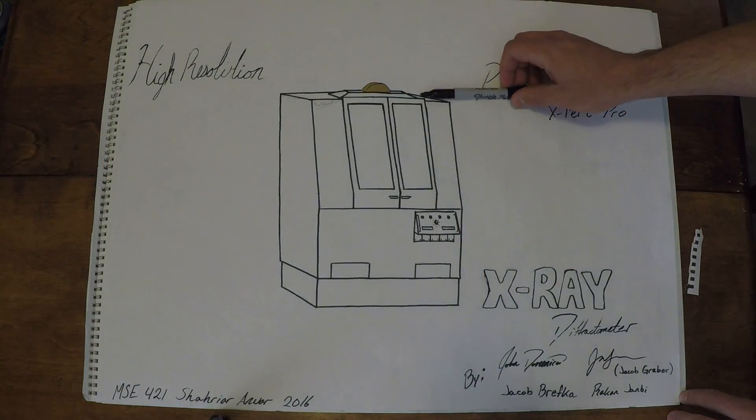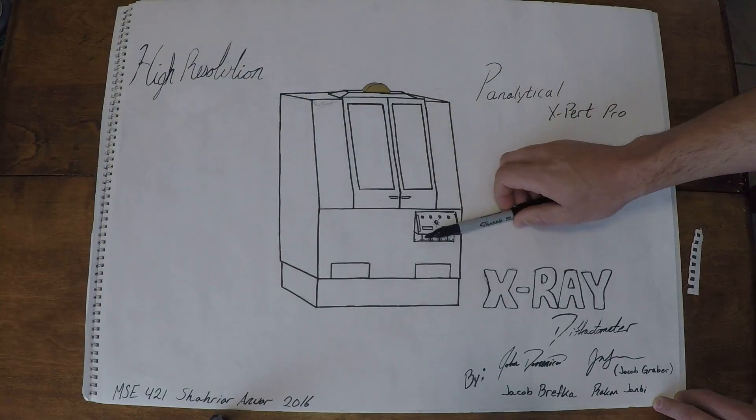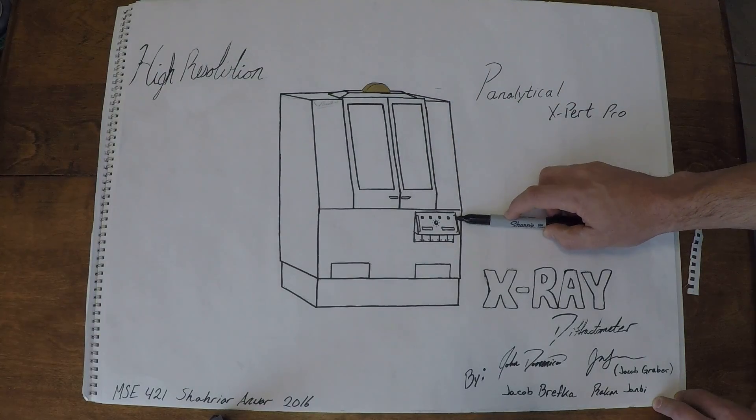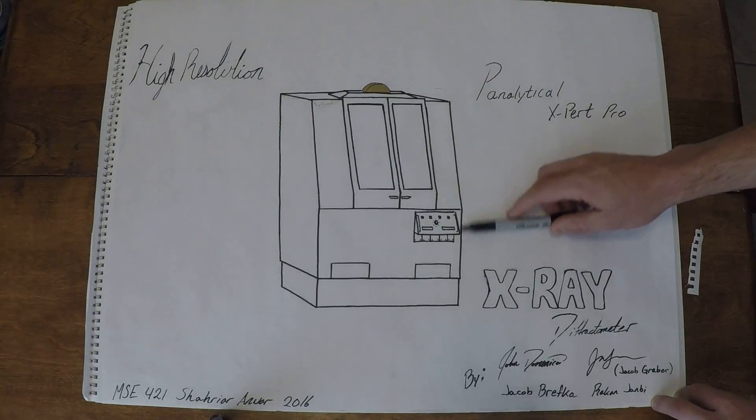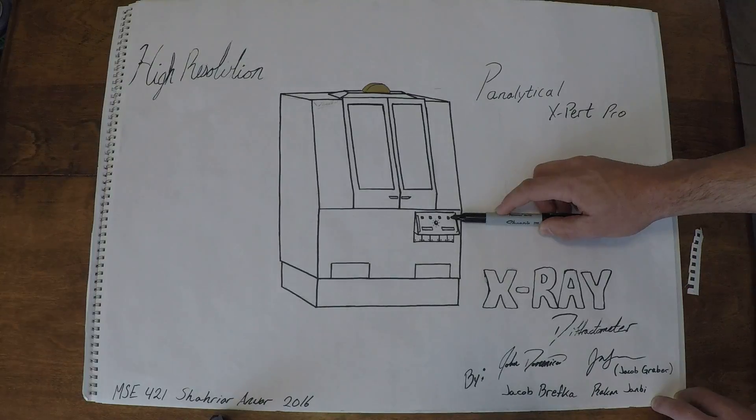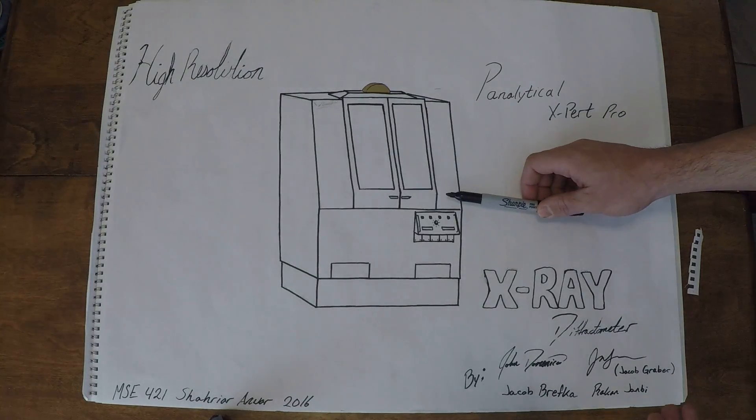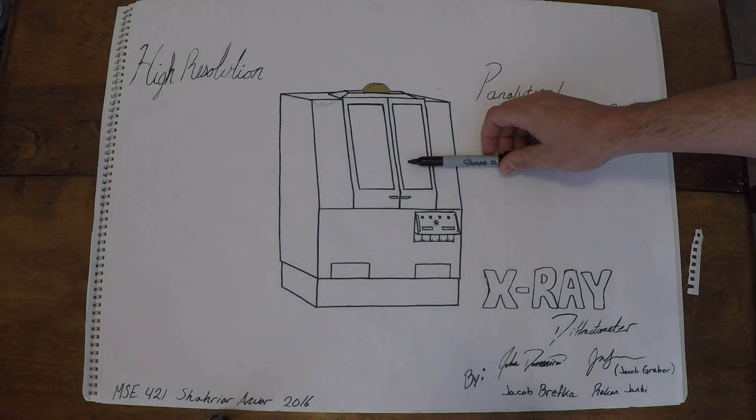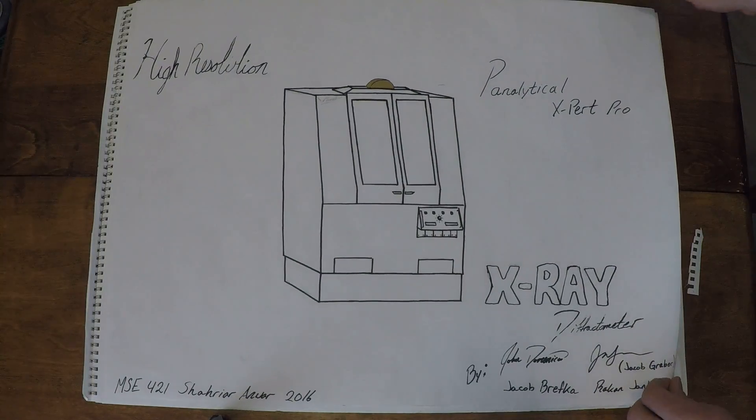Right here on this first slide, this is a general drawing of what the Expert Pro looks like. Not too much going on here, but I do want to draw attention real quick to this little control panel. You're going to have four distinct buttons on it. The main one you need to pay attention to is this one far to the right over here, and this is the shutter button. So before you open the doors, you always want to press this button. It ensures the x-ray is off and it also unlocks the doors. But nonetheless, let's move on and let's look at what's inside these doors when we open them up.